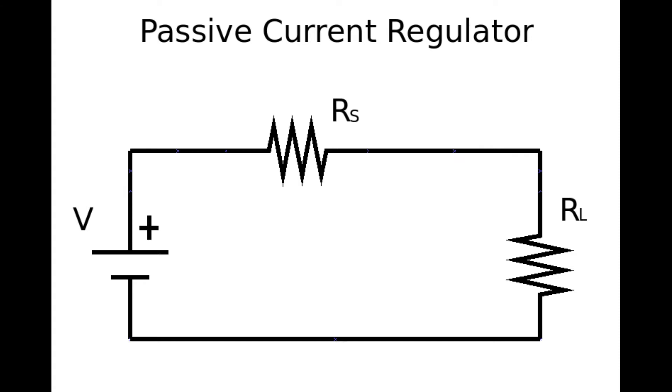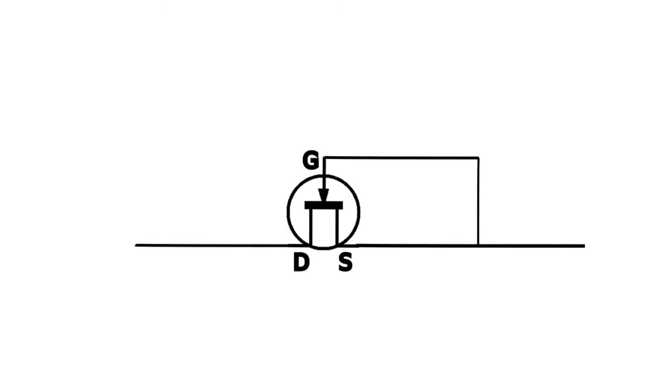Since most of the voltage goes to RS rather than the load, the constant current diode regulator is normally not used in discrete circuits; instead it is largely used inside integrated circuits. It works based on the saturation current of a JFET.